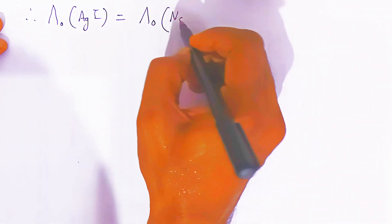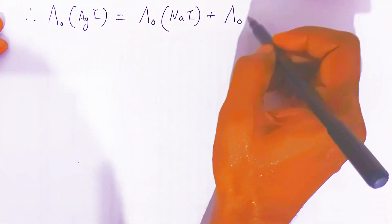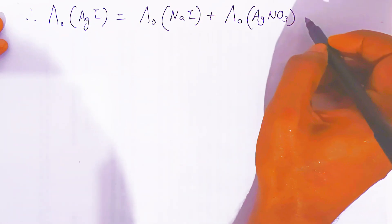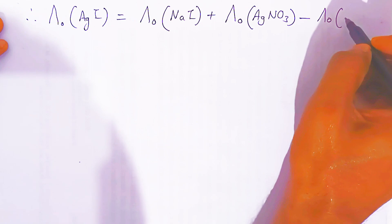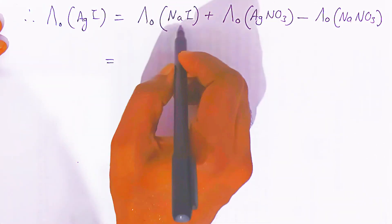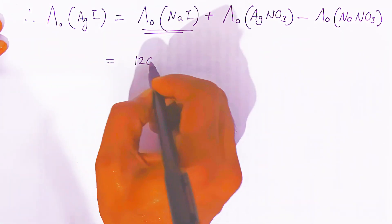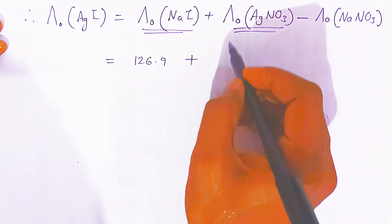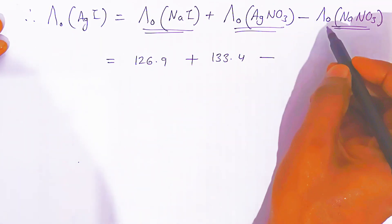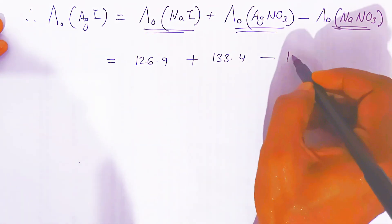Therefore, the molar conductivity of silver iodide at zero concentration equals the molar conductivity at zero concentration of sodium iodide, plus the molar conductivity at zero concentration of silver nitrate, minus the molar conductivity at zero concentration of sodium nitrate. Substituting: 126.9 plus 133.4 minus 121.5.